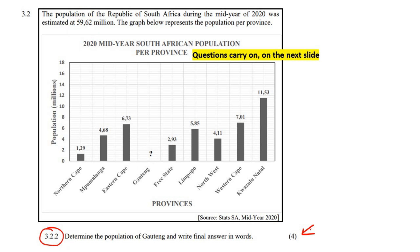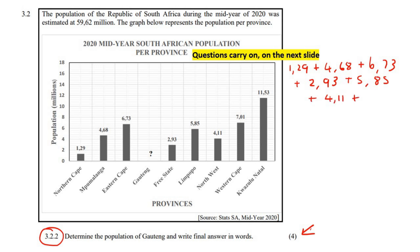So let's add up: 1.29 plus 4.68 plus 6.73, plus 5.85, plus 4.11, plus 7.01, plus 11.53.